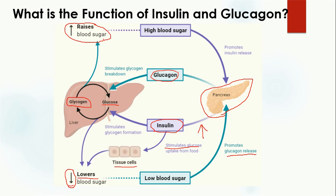As the blood glucose level rises in the blood, insulin is going to be released again. In this way, the whole cycle is repeated again and again. So this is the function of insulin and glucagon. In summary, insulin converts excessive glucose into glycogen or helps cells take up glucose and use it for energy.